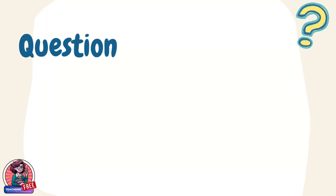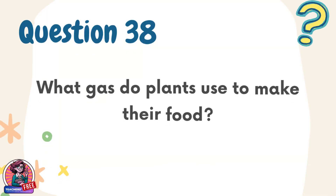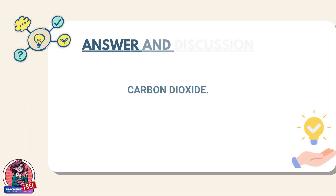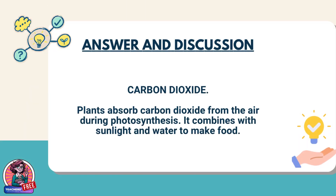Question 38. What gas do plants use to make their food? Answer: Carbon dioxide. Plants absorb carbon dioxide from the air during photosynthesis. It combines with sunlight and water to make food.